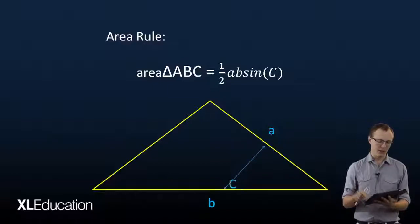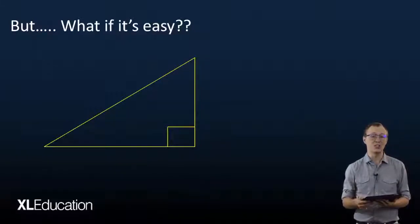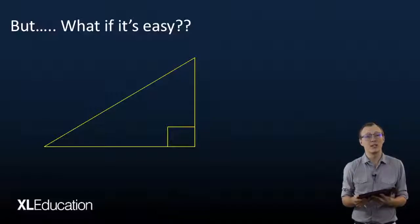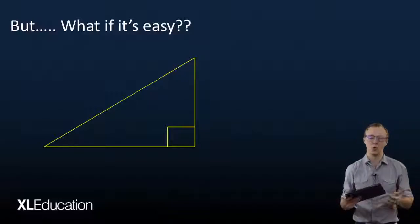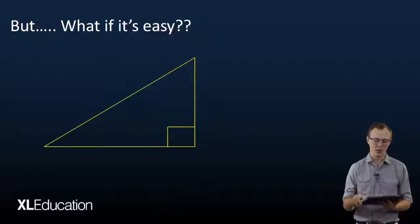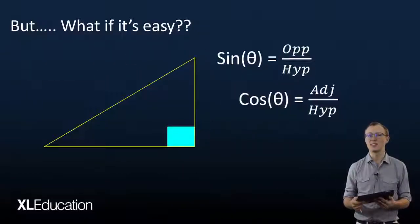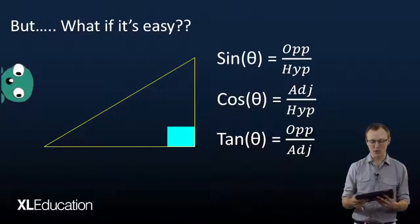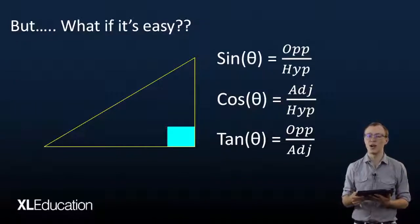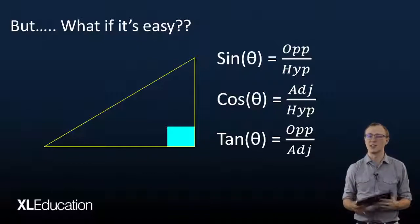Moving on from that, we have the case where sometimes it's easy. Where we don't have to use the sine rule, the cos rule, or the area rule. So if you have a right-angled triangle, you know that you can use our good old friends sine, cos, and tan in order to solve problems relating to the angles and the sides of those triangles. And you know what, sometimes it is easy. So when it is, don't overcomplicate it, just use sine, cos, and tan.